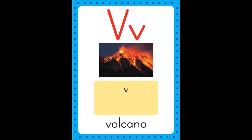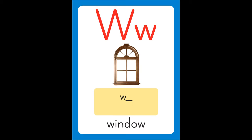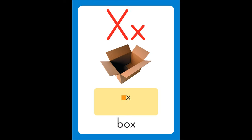V is for volcano, v-v-volcano. W is for window, w-w-window. X is for box, x-x-box.